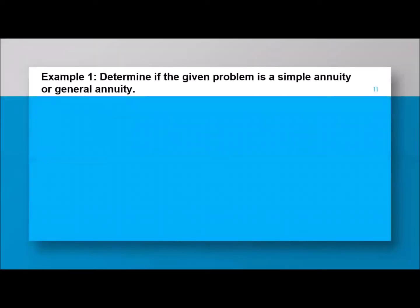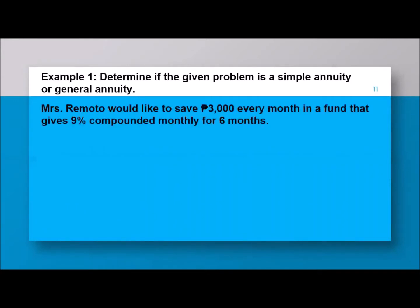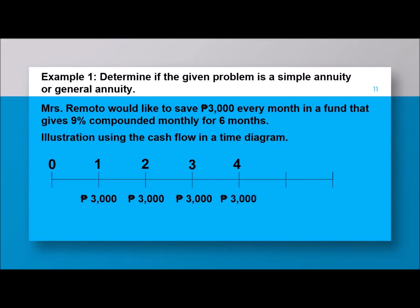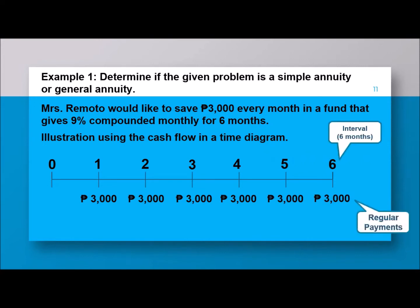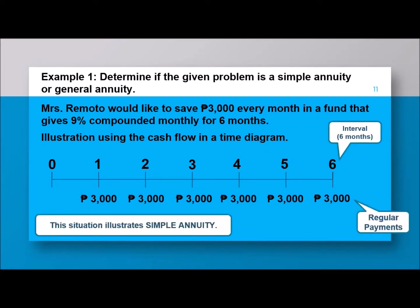I hope you can still recall our example from the previous video lesson about Mrs. Remoto, who would like to save 3,000 pesos every month in a fund that gives 9% compounded monthly for 6 months. We have the cash flow — like a number line showing the 6-month interval on top and the regular payments below. Our conclusion was that this is a simple annuity because the payment period and interest period are both monthly — they are the same.